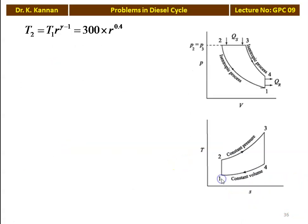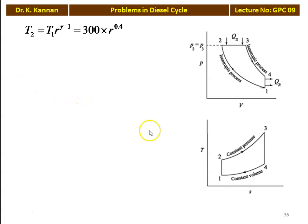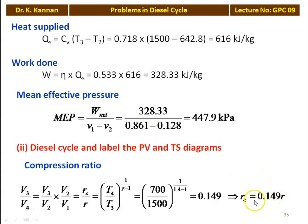We draw the PV and TS diagrams for the Diesel cycle labeling all processes: 1 to 2 isentropic compression, 2 to 3 constant pressure heat addition, 3 to 4 isentropic expansion, 4 to 1 constant volume heat removal. For the compression process, T2 equals T1 into R to the power 0.4: 300 into R to the power 0.4. For constant pressure heat addition, Rc equals T3/T2 equals 1500 divided by T2. Substituting T2: Rc equals 1500 divided by (300 into R to the power 0.4). This is one expression for Rc. From the expansion process we have another: Rc equals 0.149·R.